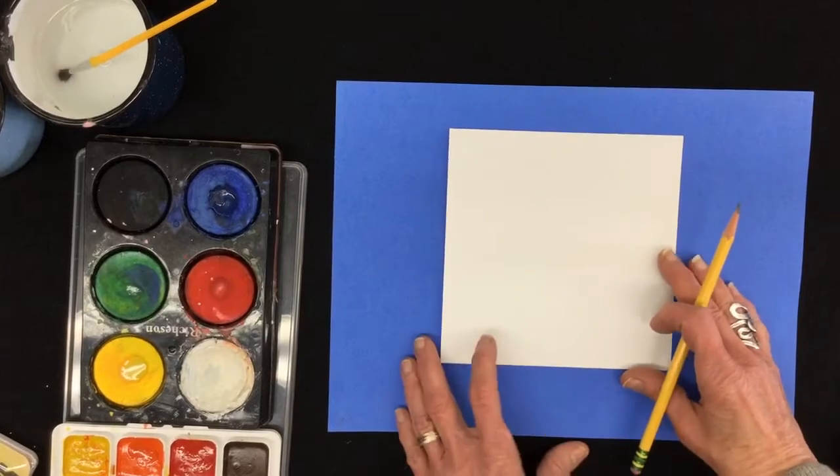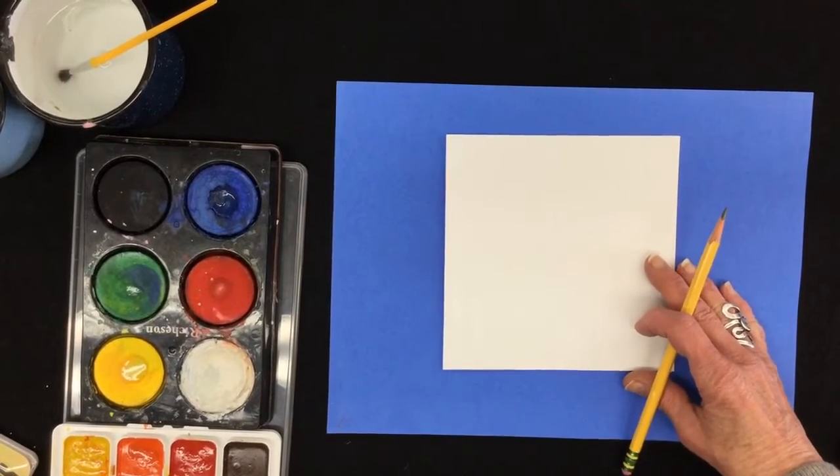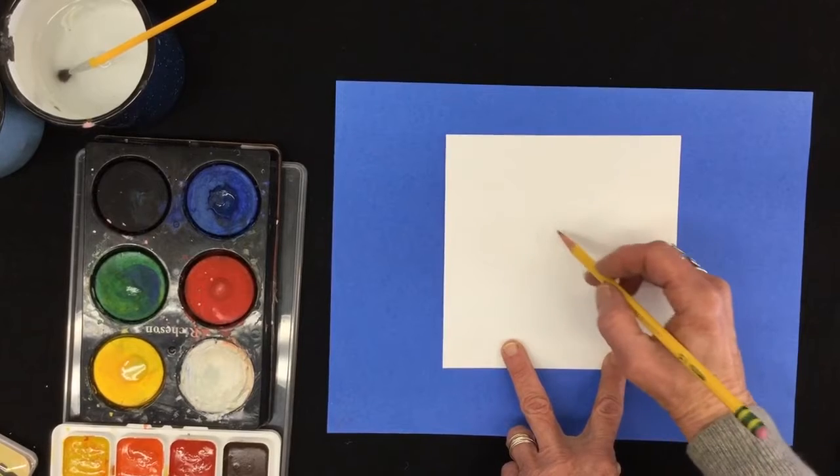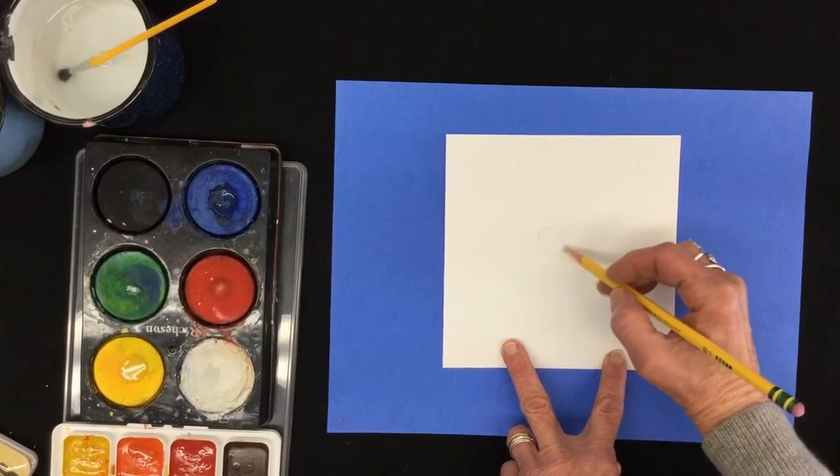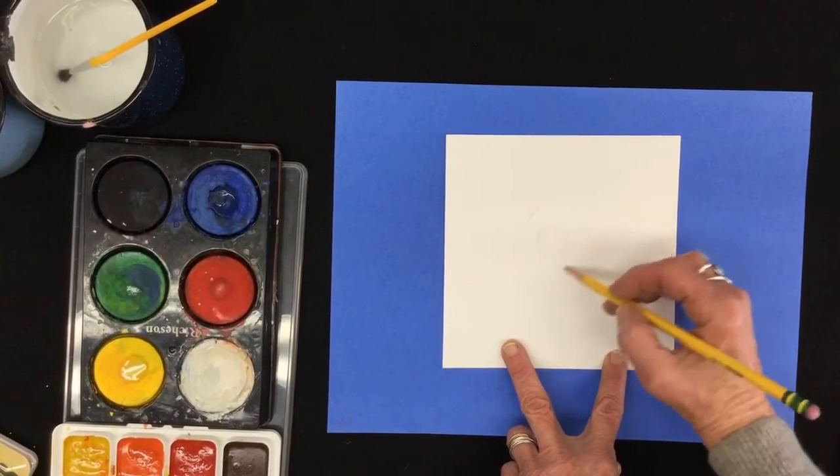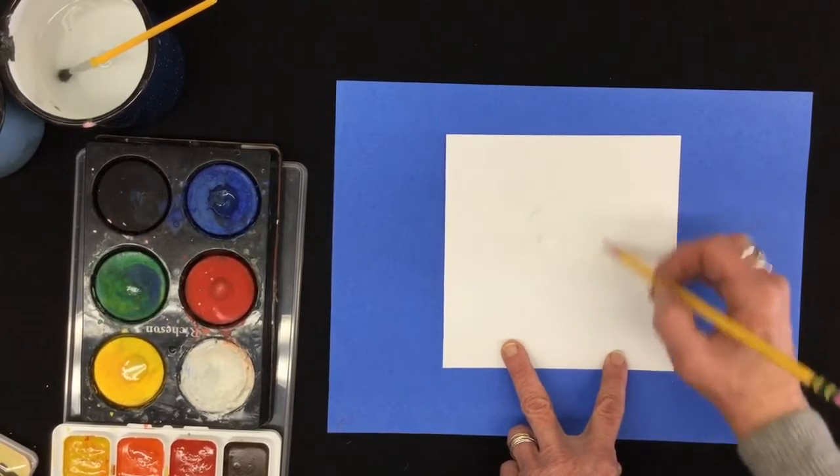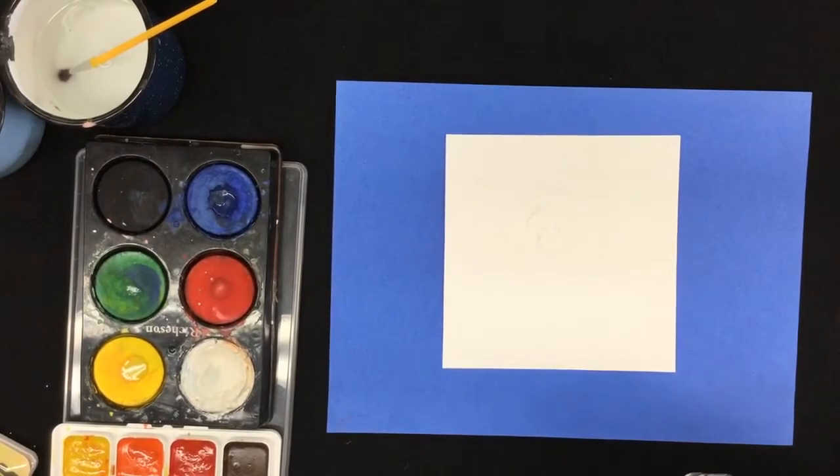When Alma Thomas did her work, she actually penciled in some areas first. If you go to a museum and see her work, you can actually see some of the pencil lines still on the canvas. So I might start with that circle and I might do a few lines. You can, or you don't have to.